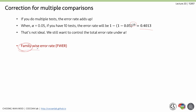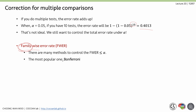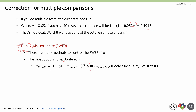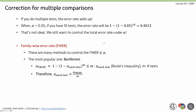We want to control the total error rate under α — this is called the family-wise error rate. There are many methods; the most popular is Bonferroni correction, which simply divides α by the number of tests. Based on Boole's inequality, if we divide the desired family-wise α by the number of tests m, that gives the α for each individual test. For example, to keep a family-wise error rate of 0.05 with 10 tests, each test uses α = 0.005.